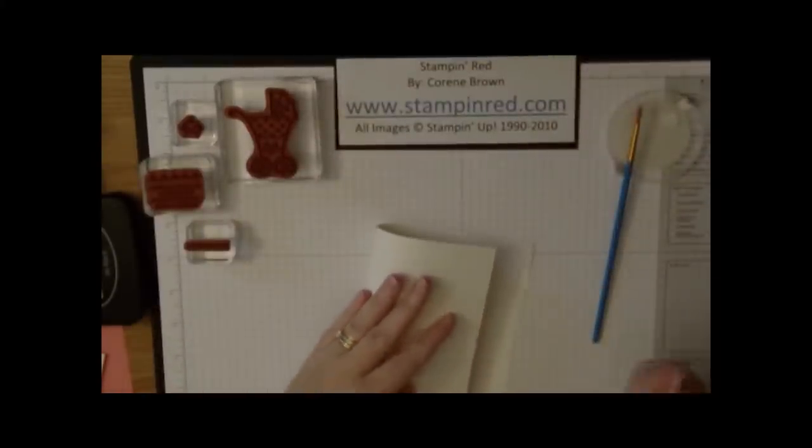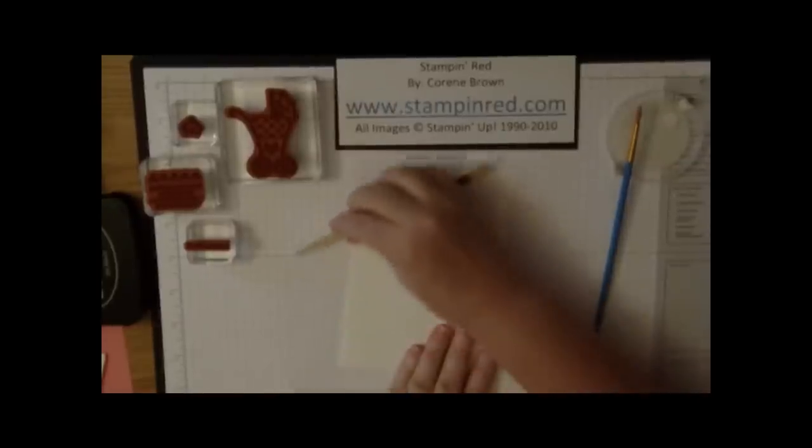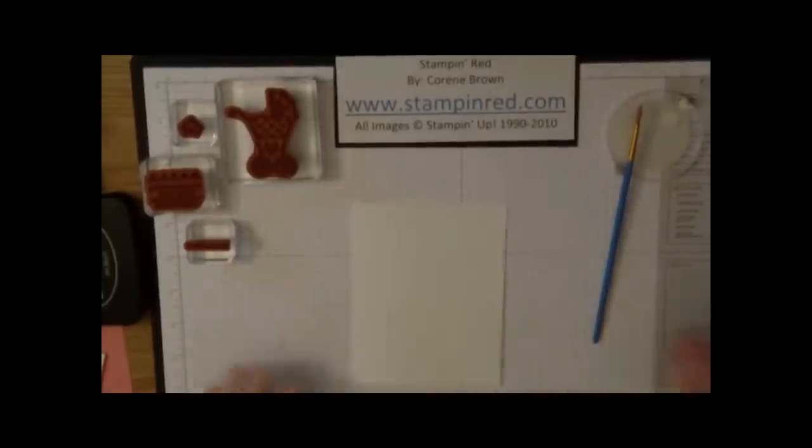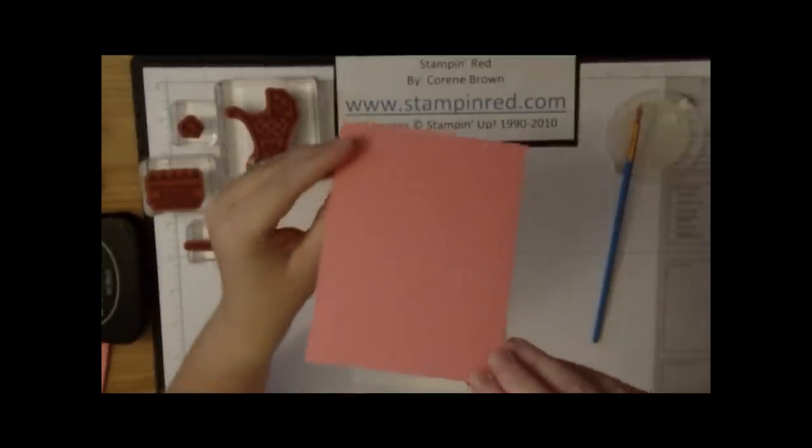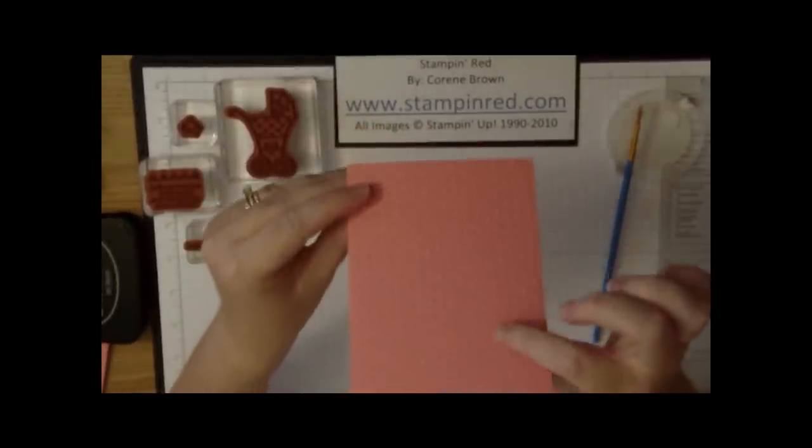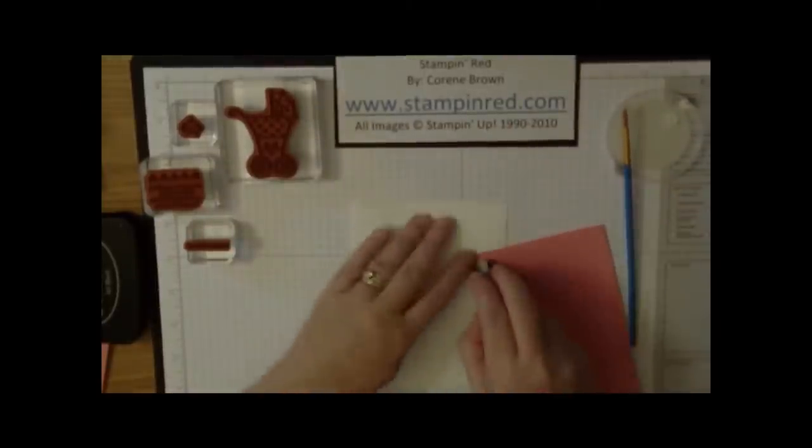First we're going to fold over our cardstock, which is Whisper White, with the bone folder. And then we are going to add the embossing folder Regal Rose piece that gives it all these polka dots from the Big Shot. I've already done that today, so I'm just going to add that to the front of the card.